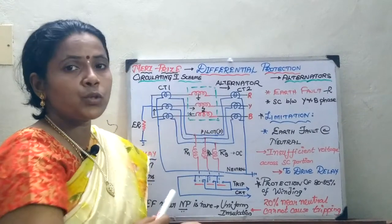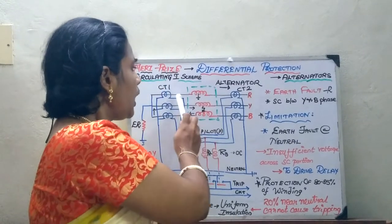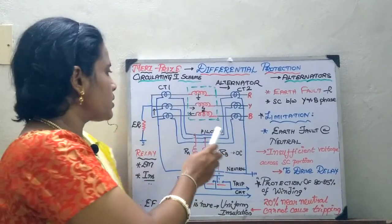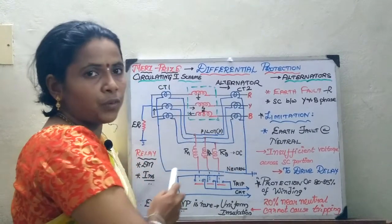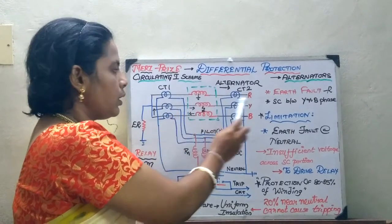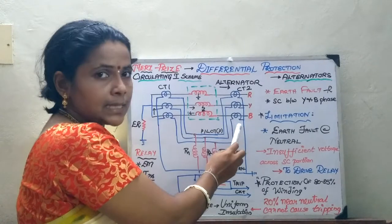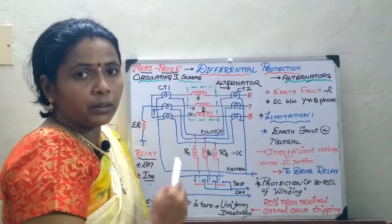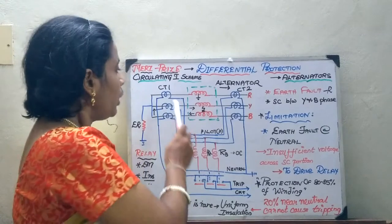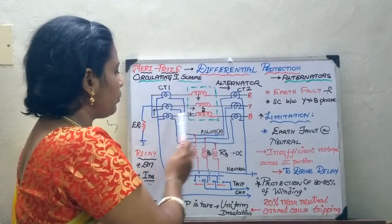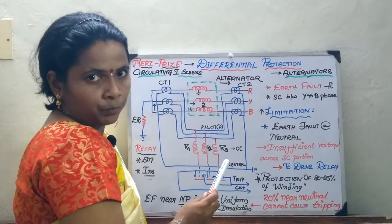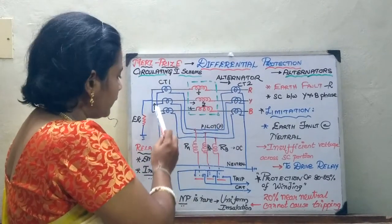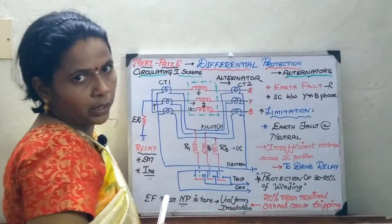Now we will see how to draw the circuitry. First, draw the three-phase winding — R, Y, and B phase. Then connect the CTs from both ends; in each phase R, Y, B, CTs are connected so that current can be taken from their secondaries and connected to the relay coil. In this case, star-connected CTs are used on both sides, and both star ends are grounded.